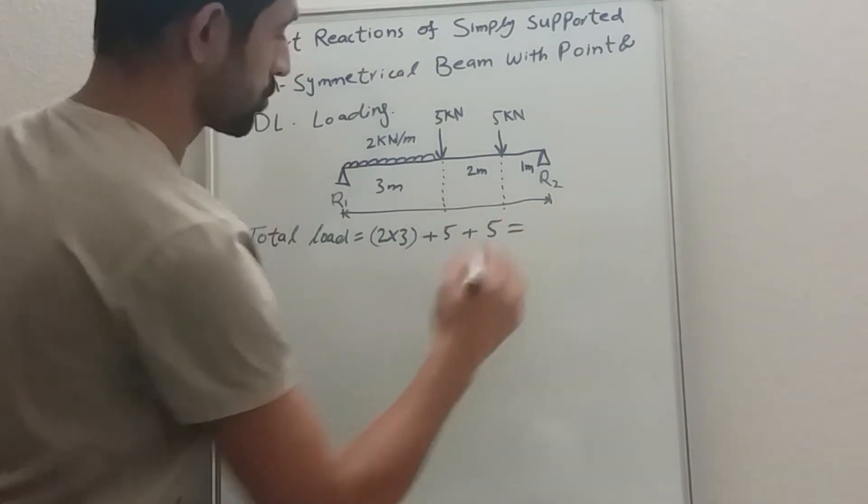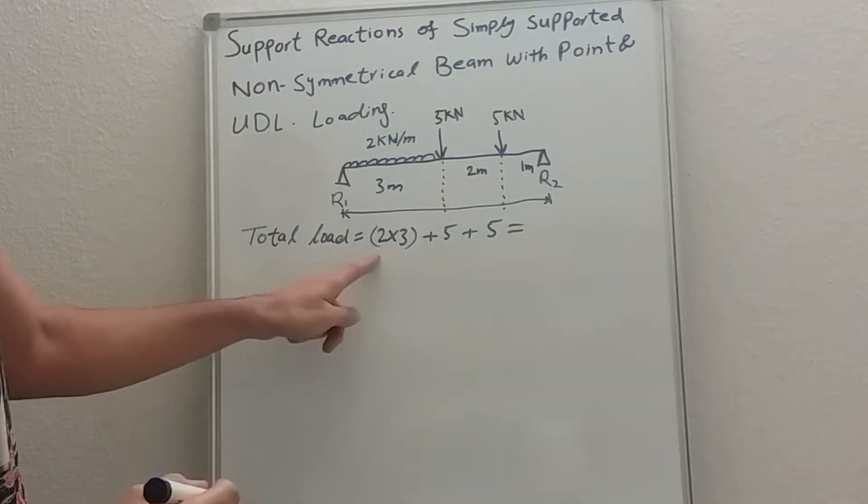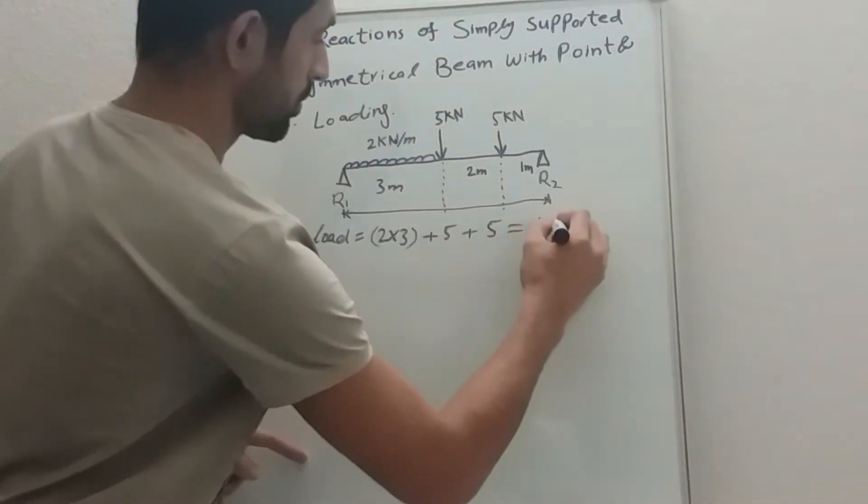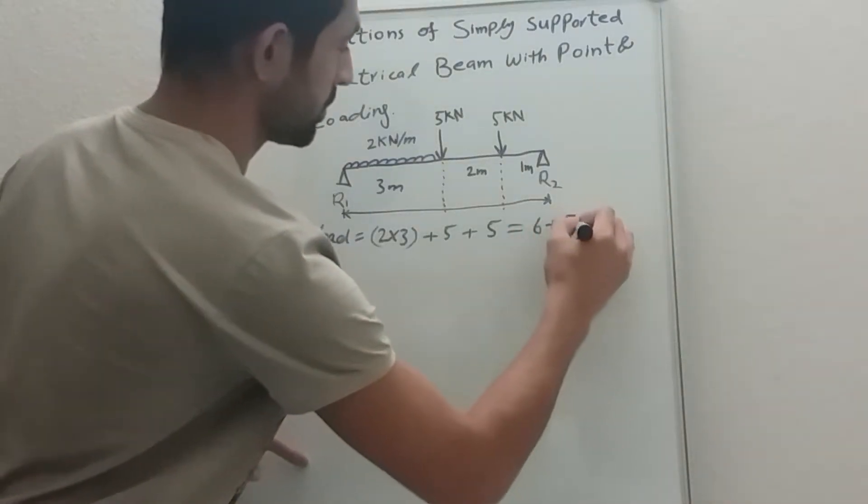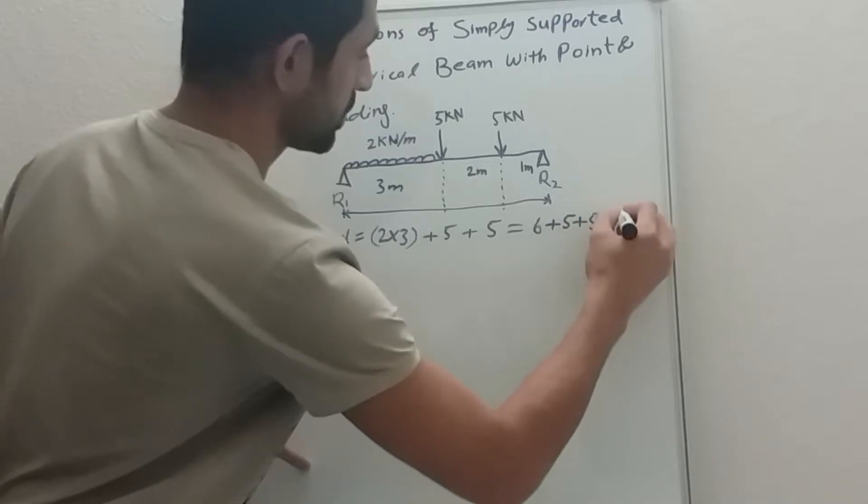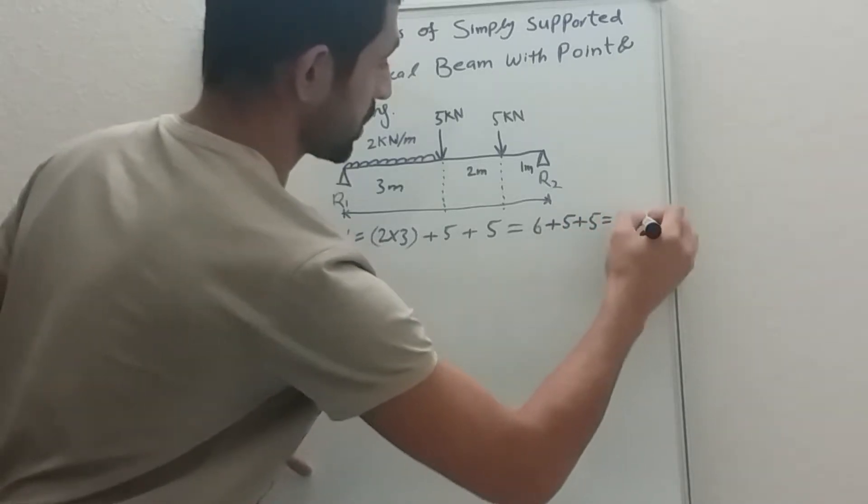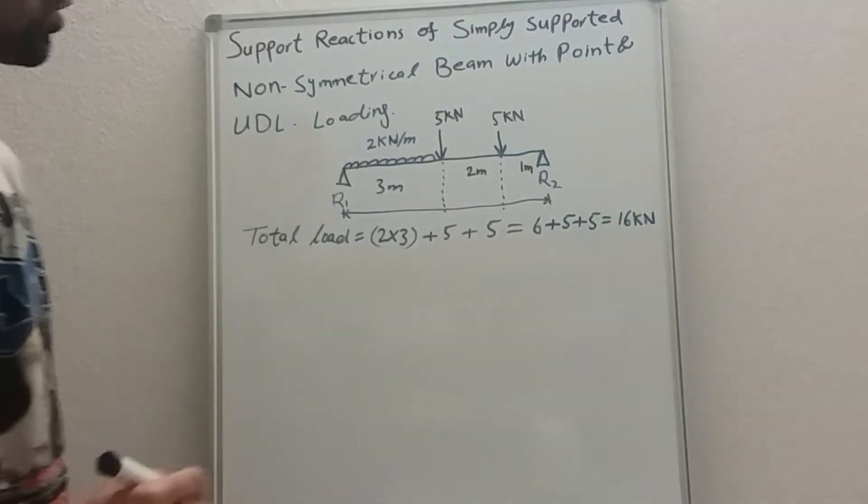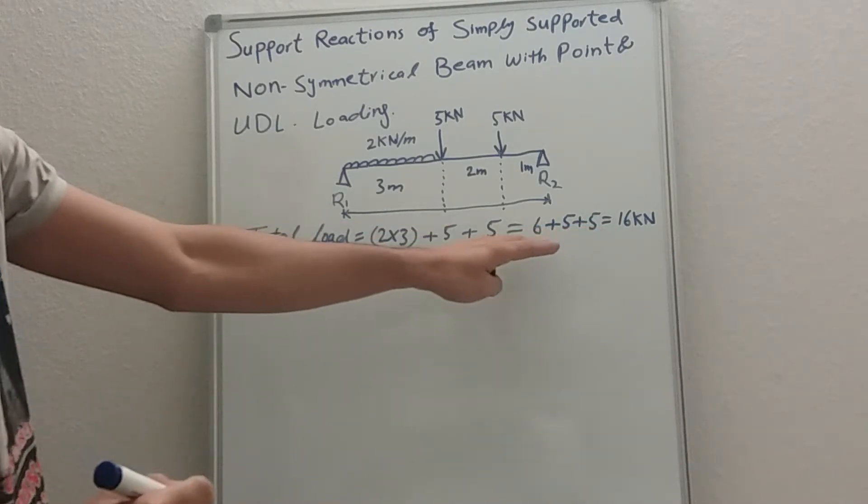So how much is it going to be? Two times three is six, plus five plus five equals sixteen kilonewtons. So altogether we have sixteen kilonewtons acting on our beam.